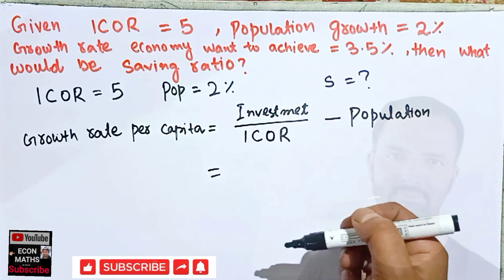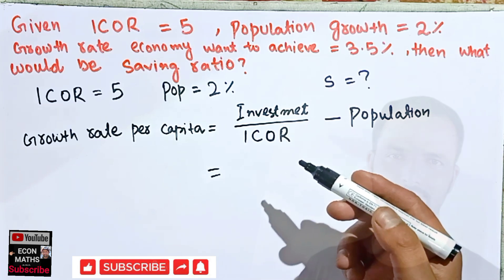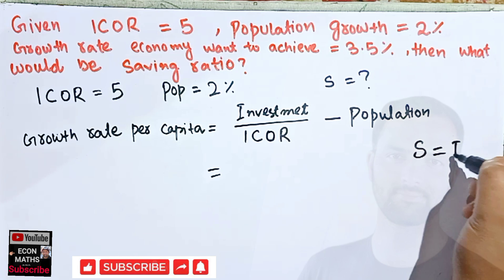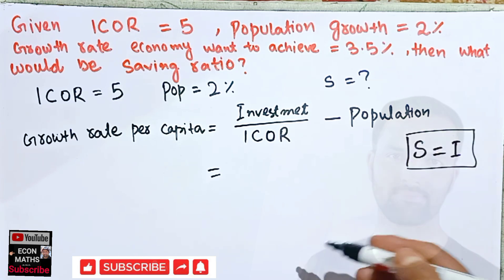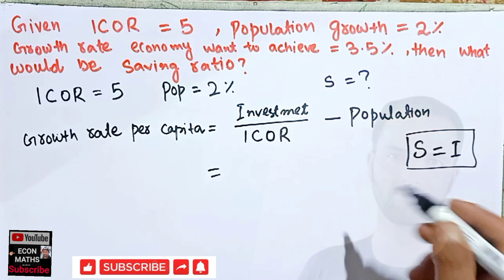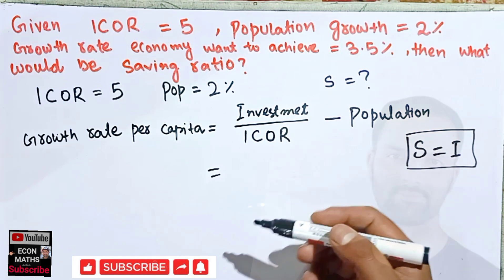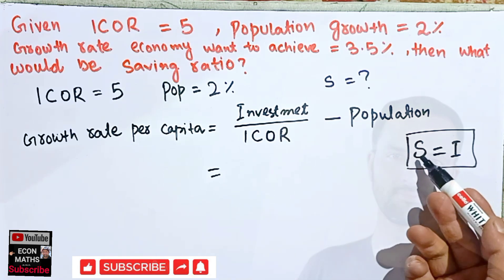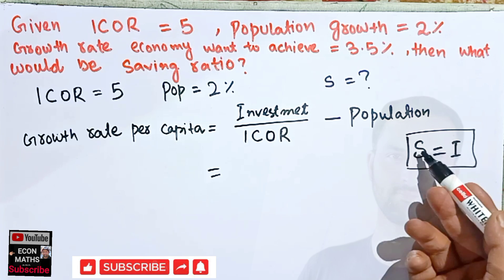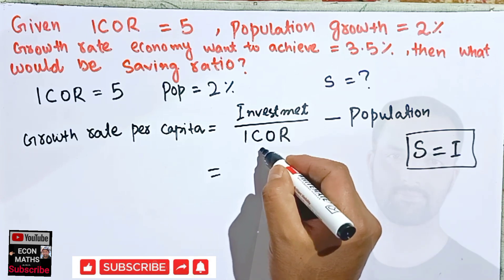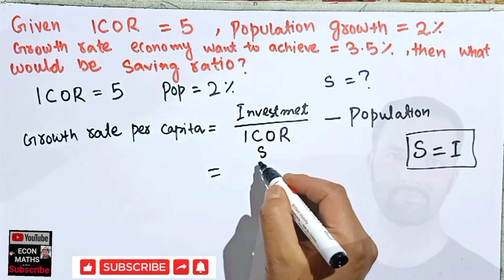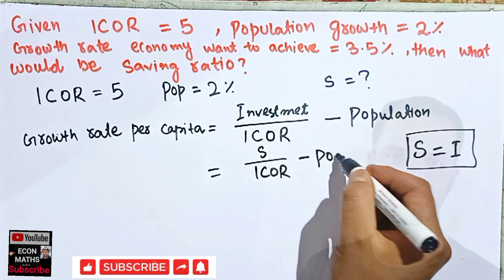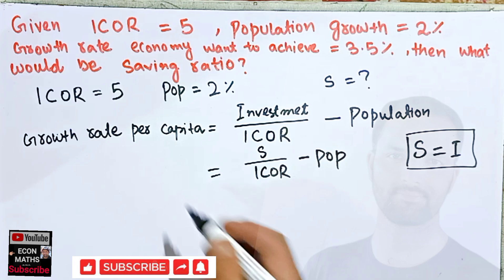One of the basic assumptions of the Harrod-Domar model is that whatever is saved is invested — that is, s equals i. So in place of investment, we can write s. The formula becomes: growth rate per capita equals s upon ICOR, minus population growth rate. Let us denote it by G.